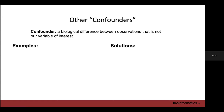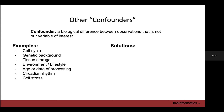Depending on the dataset, there may be other confounders to address. Confounders are biological differences — real biological signals — that we just don't care about. Examples include: cell cycle, genetic background of different individuals, tissue storage (frozen vs. fresh, or different storage durations), environmental or lifestyle factors, age, data processing, circadian rhythm, or cell stress. Most of the time we don't care what these are doing in our data, so we'd prefer to just get rid of them.